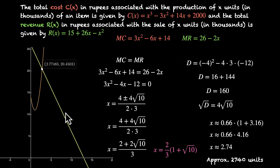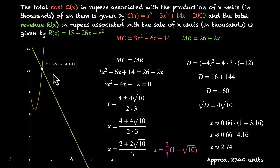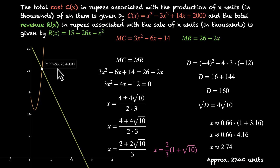Looking at the graph, marginal cost goes down and then comes back up, while marginal revenue steadily declines. What's good for business is to stay to the left of the intersection point. At approximately x = 2.74 (or 2740 units), marginal cost equals marginal revenue, and we should keep marginal cost low and marginal revenue high.